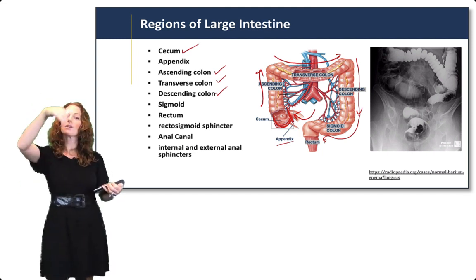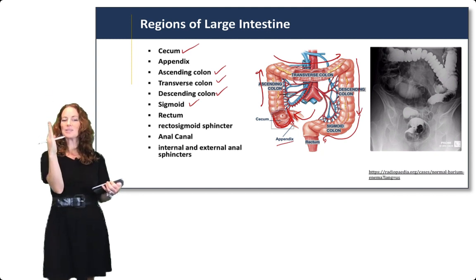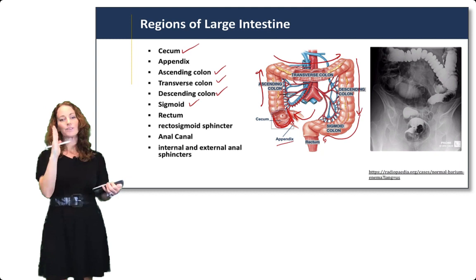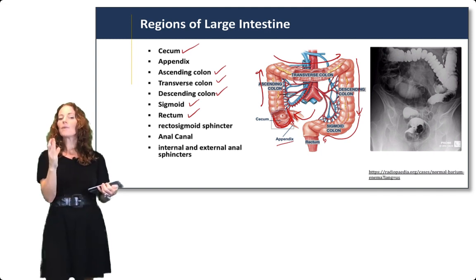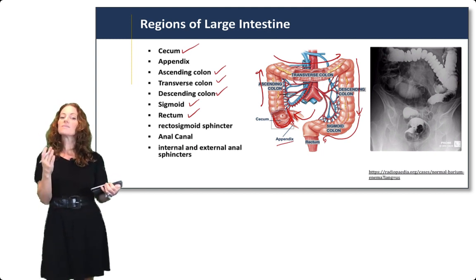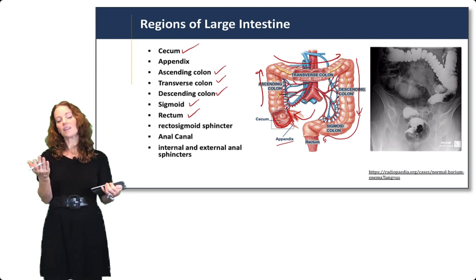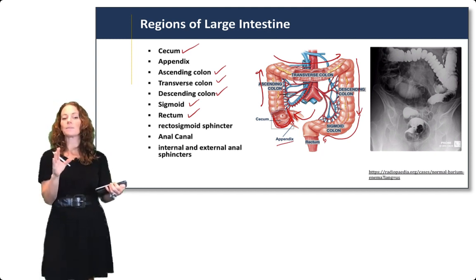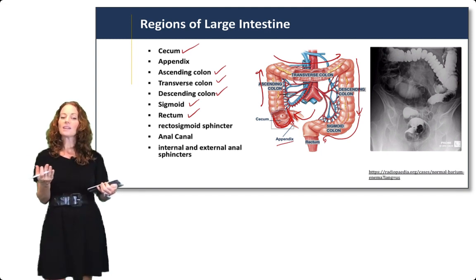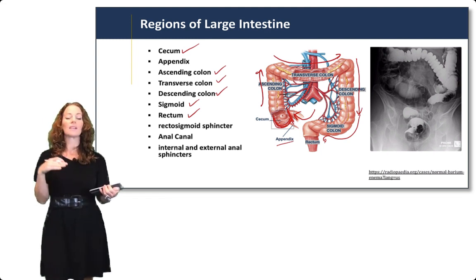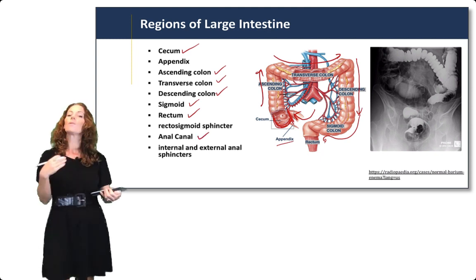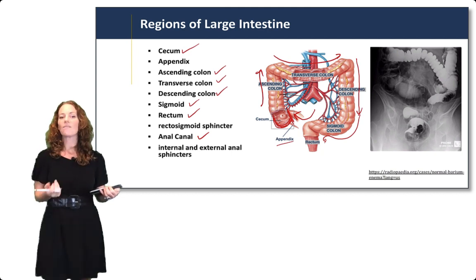The sigmoid colon is the last curve before we reach the straight portion leading to the anal canal. The term for straight is rectus, so the straight portion is the rectum. From the rectum to the anal canal we have sphincters — the rectosigmoid sphincter helps control contents moving into the anal canal. The anal canal is the last portion where fecal matter is excreted. It has internal smooth muscle and external skeletal muscle sphincters to control the defecation reflex.